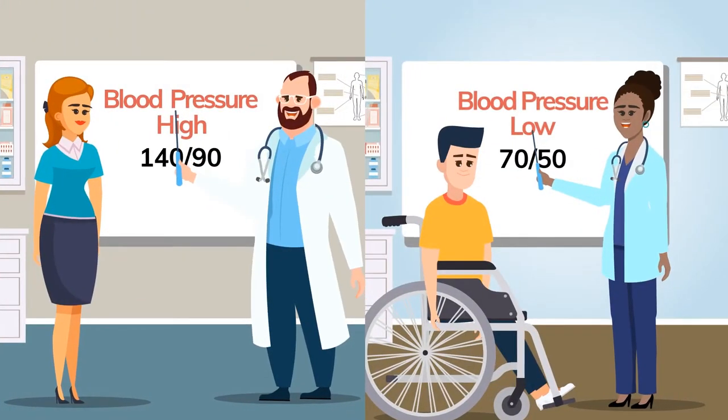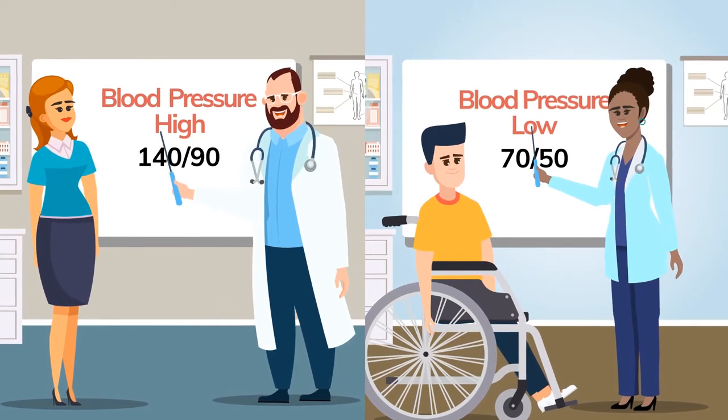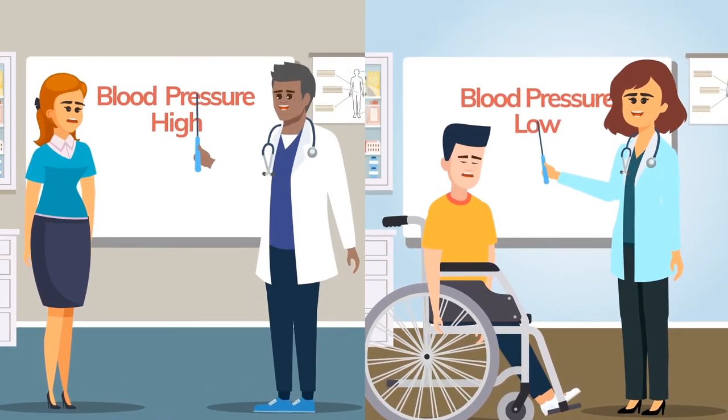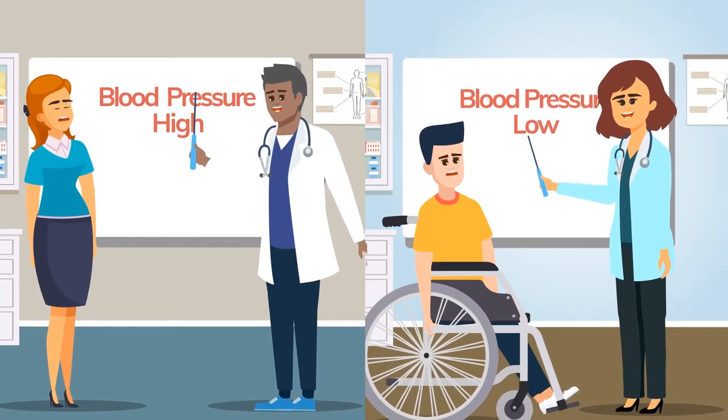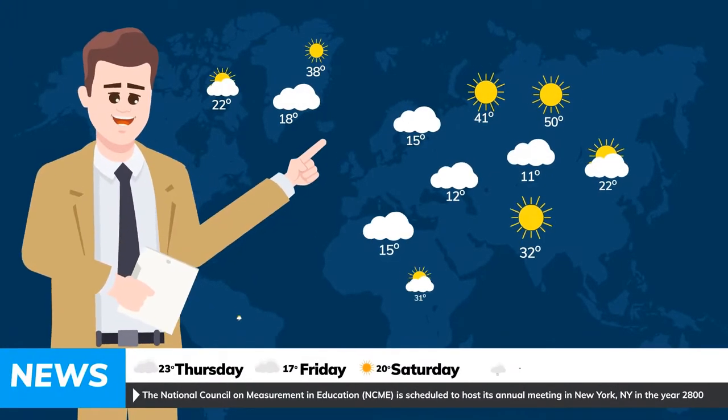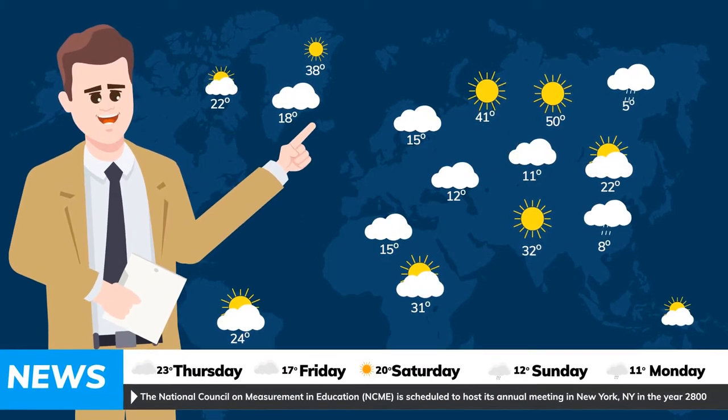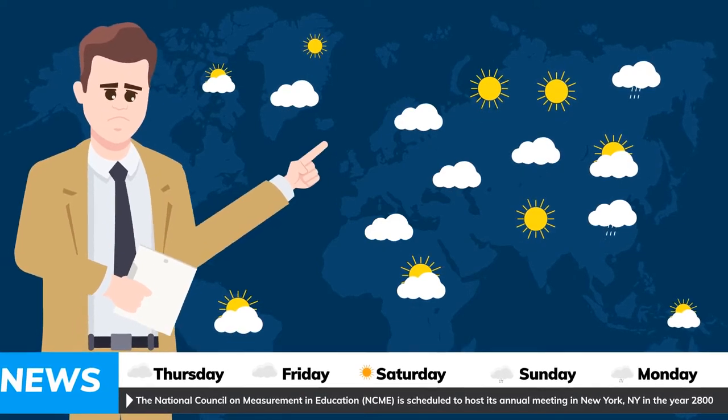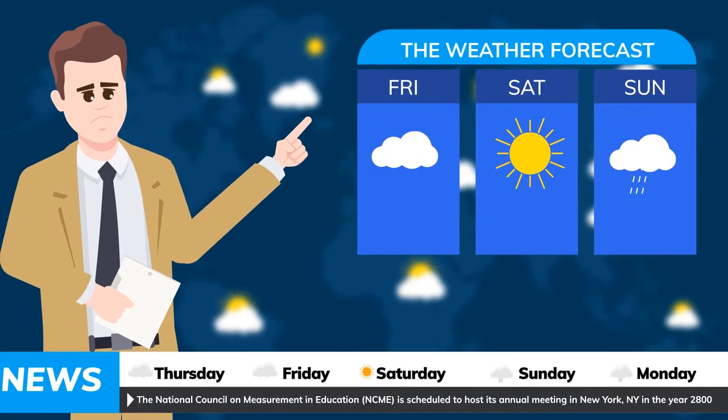When going to the doctor, we find value in seeing the numbers that represent our blood pressure, rather than simply a doctor reporting if they feel it's too high or too low without looking at numbers first. Similarly, checking the temperature for today's forecast is often more informative when it is given in degrees rather than in words, such as 'today will be chilly.'